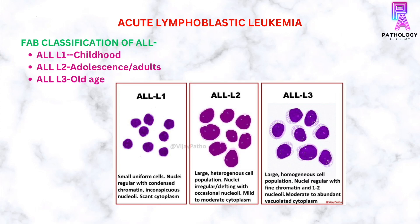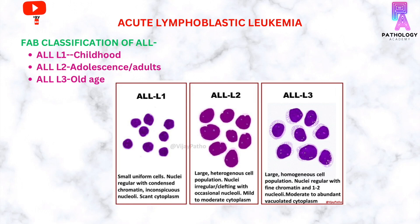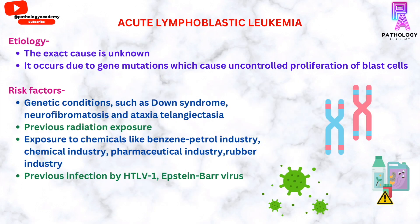In L2, the cytoplasm is mild to moderate in amount. The L3 subtype occurs mainly in an older age group, and in this the blast population is a homogeneous cell population of large cells with regular nuclei, fine chromatin, and 1 to 2 nucleoli. The cytoplasm is moderate to abundant with vacuolation.